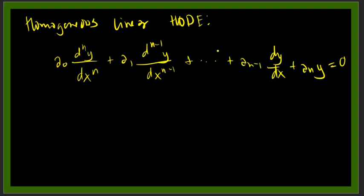So if our highest order derivative is 4, then we have the 4th order, then the 3rd, 2nd, 1st order, all the way down to a-sub-n times y equals zero. What makes this a constant coefficient equation is the 'a' coefficients — they are all constants, and the left side of the equation equals zero.